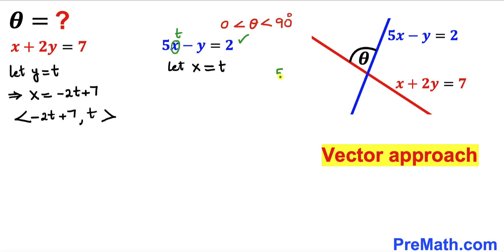5t minus y equals to 2. Now we are going to move y to the other side and at the same time move 2 in the opposite direction.